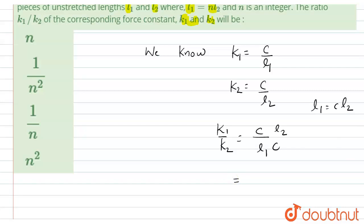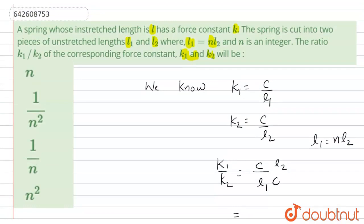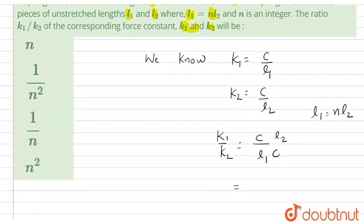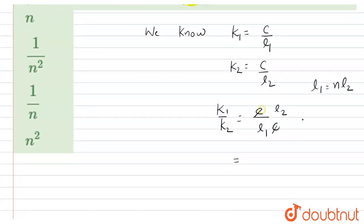Now on substitution, we can write this as NL2 because we have given L1 equals NL2. When we put this value, C will cancel out. We get L2 divided by NL2, and L2 will also cancel out.